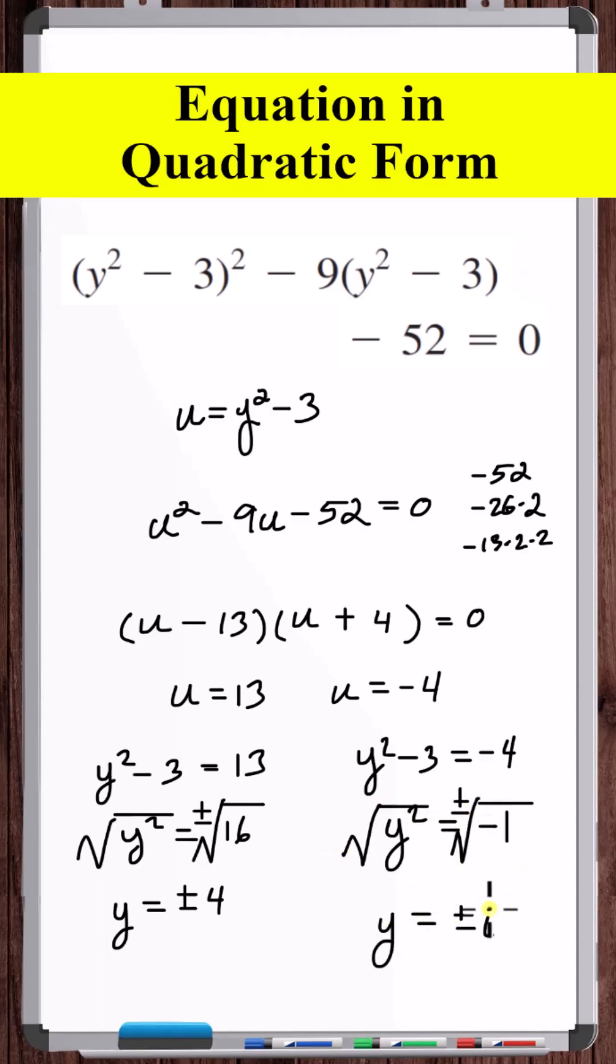This is plus or minus i. So the only real solutions are plus or minus 4. But there's also two imaginary solutions, plus or minus i.